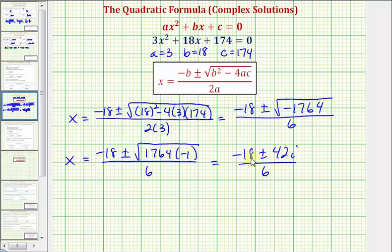We want to separate this into two separate fractions and then simplify them separately. So we have x equals negative 18 divided by 6 plus or minus 42 divided by 6i.